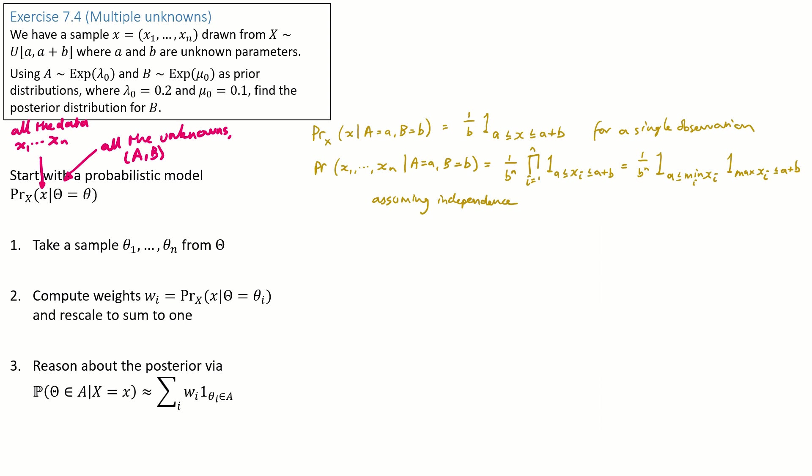Good. Now on to the next step. Take a sample theta 1 up to theta n from the random variable theta. Remember, we said that theta is a pair of unknowns. Theta equals A comma B. So this instruction is telling us to take a sample of AB pairs. The question tells us what distribution to use as the prior for A, and what distribution to use as the prior for B, but it doesn't say anything about AB pairs.